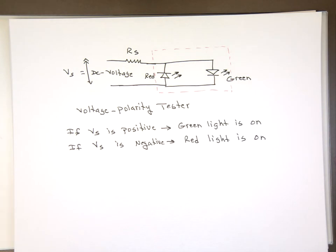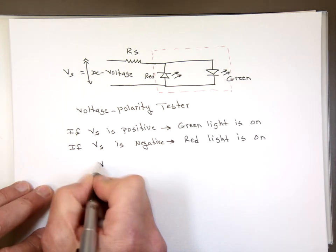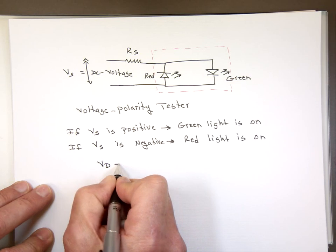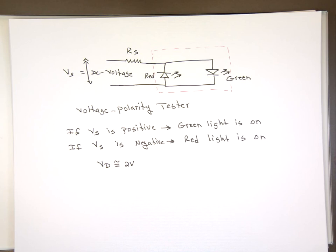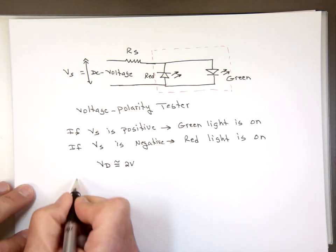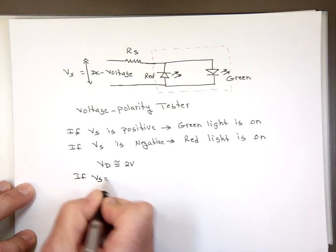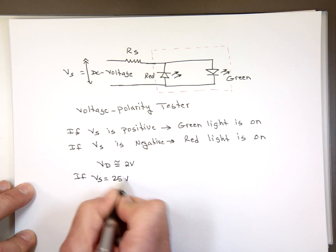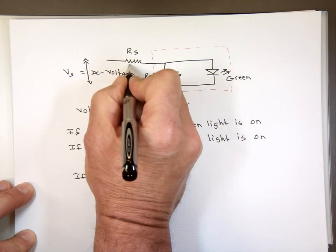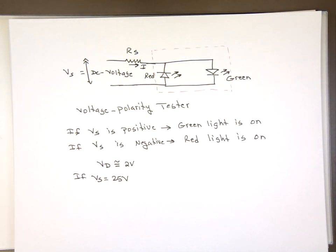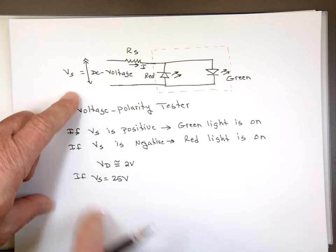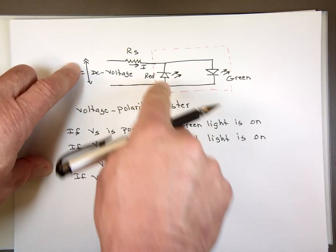As I said, most of these diodes have a VD voltage, the forward voltage diode, roughly, approximately 2 volts. So just an example. If you want to do a quick calculation. If VS equals, I don't know, 25 volts, what is the current going through it? How big is that current? Well, if VS is positive 25 volts, that means this one is off, this is on. So the current is going to travel this way.